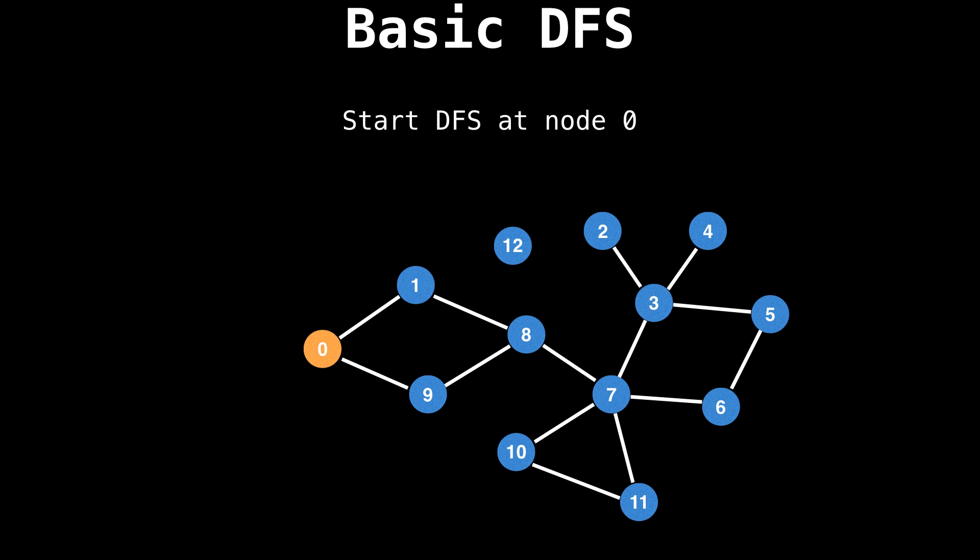A depth first search has to start on a node, and I'm going to start our depth first search on node zero. Now we arbitrarily pick a node to go to from node zero. We're going to go to node nine, then from node nine we only have one choice, which is to go to node eight. At node eight, arbitrarily pick an edge, so we're going to go outwards to node seven. At node seven we have plenty of edges to choose from, so let's go to node 10, node 10 to node 11, and 11 to seven.